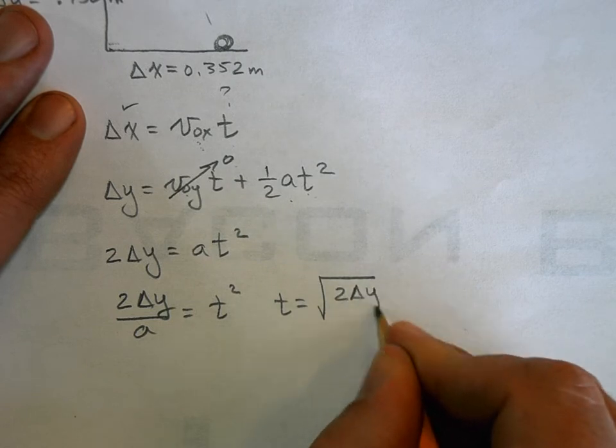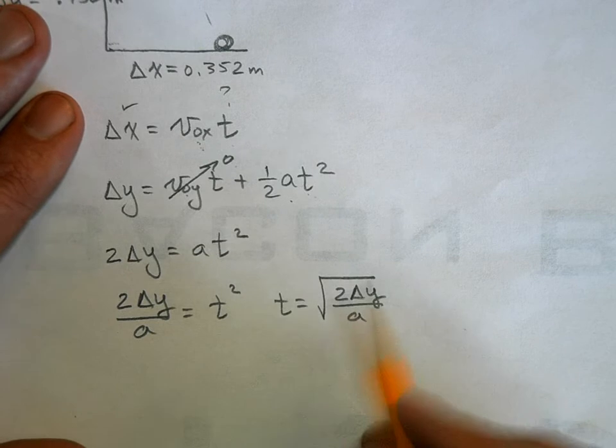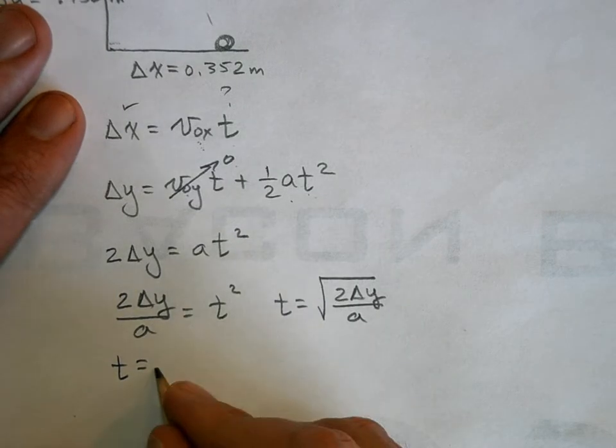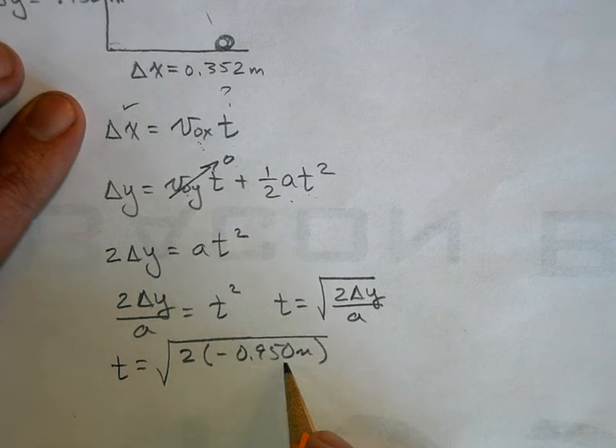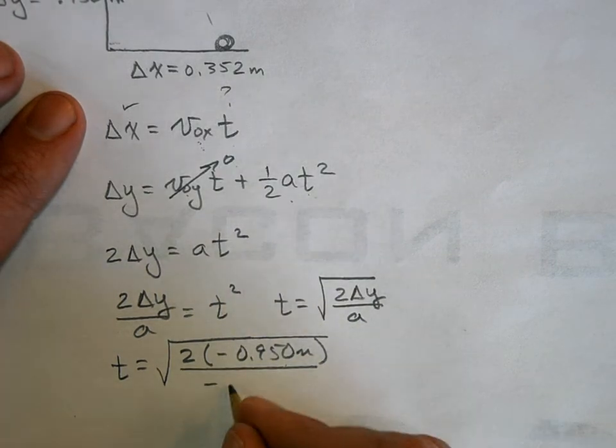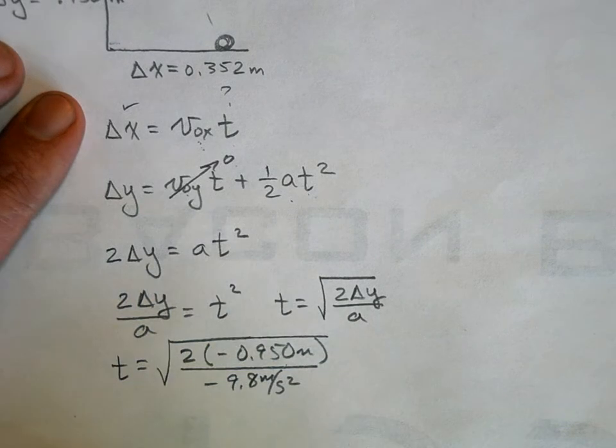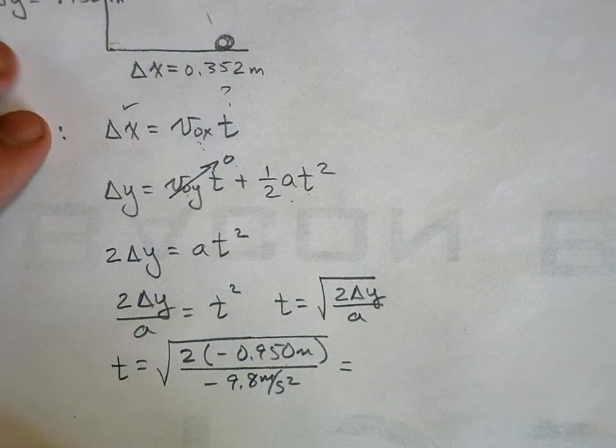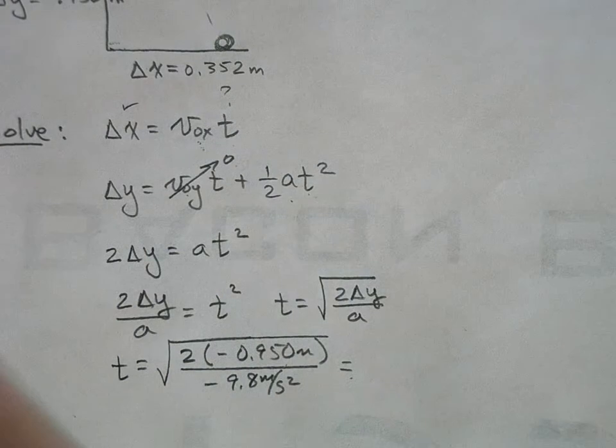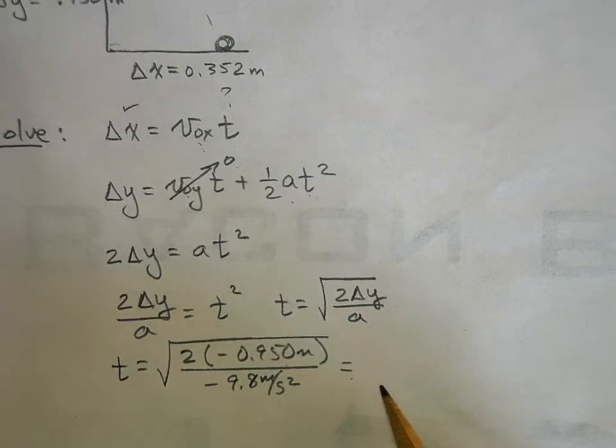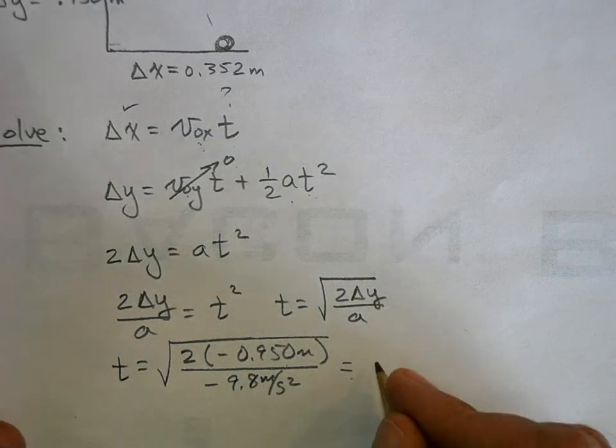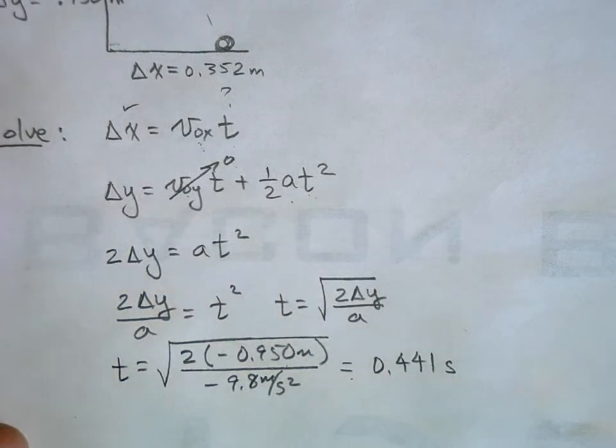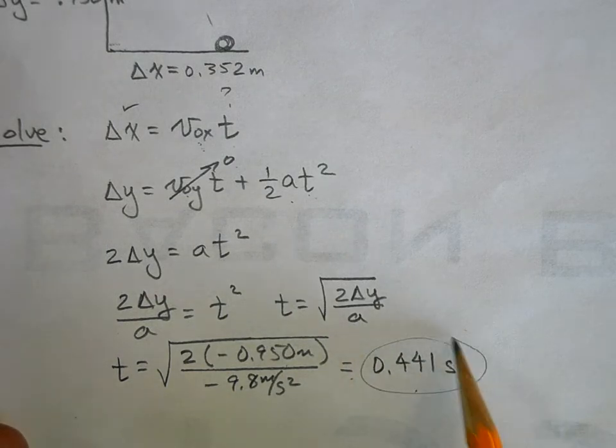Well, I know what all this stuff is, so t is equal to square root of 2 times negative 0.950 meters—this is how far the ball fell down—and this is the rate at which it accelerated, negative 9.8 meters per second squared. And you get a value for t. So 0.441, so t equals 0.441 seconds.